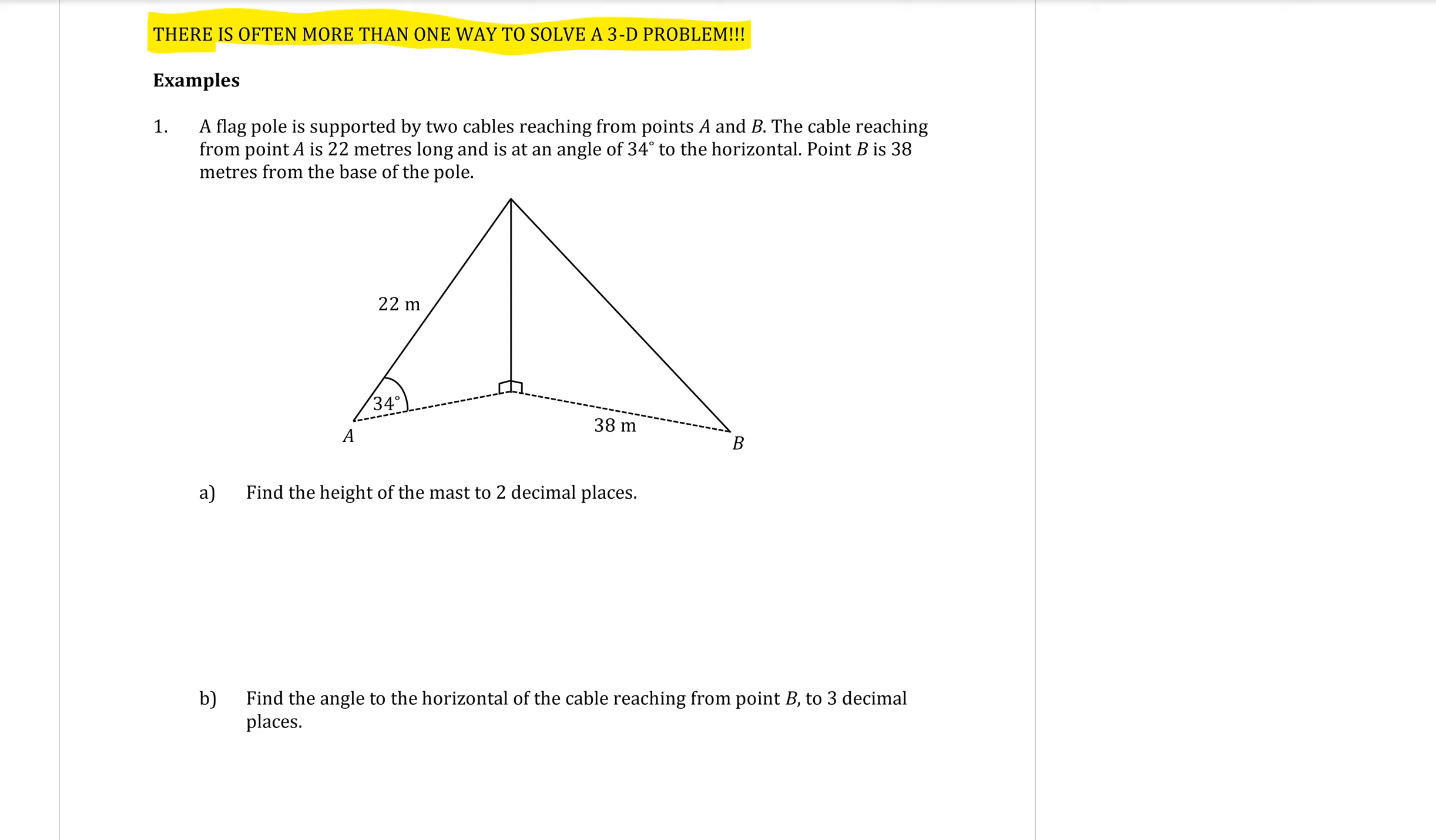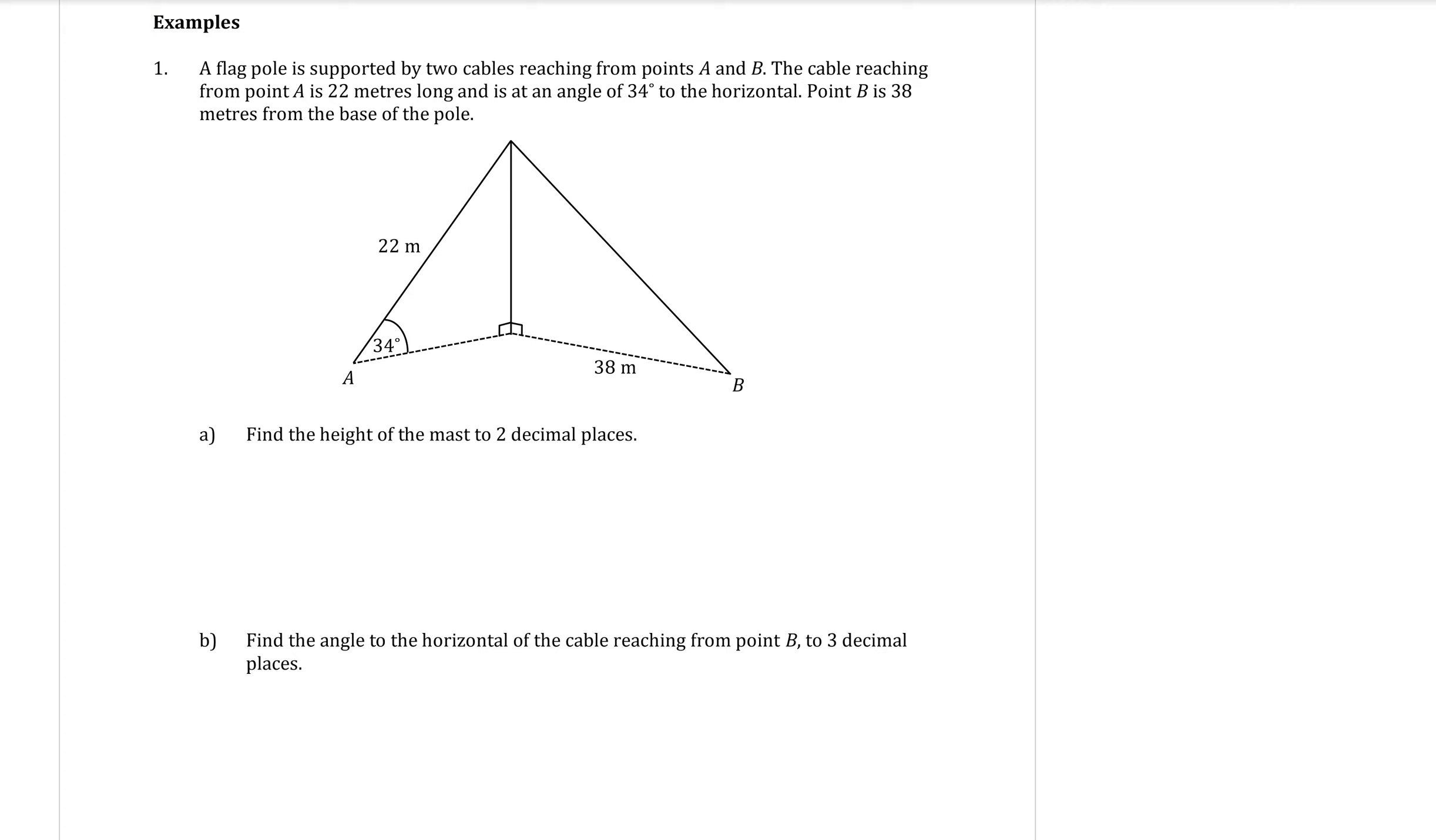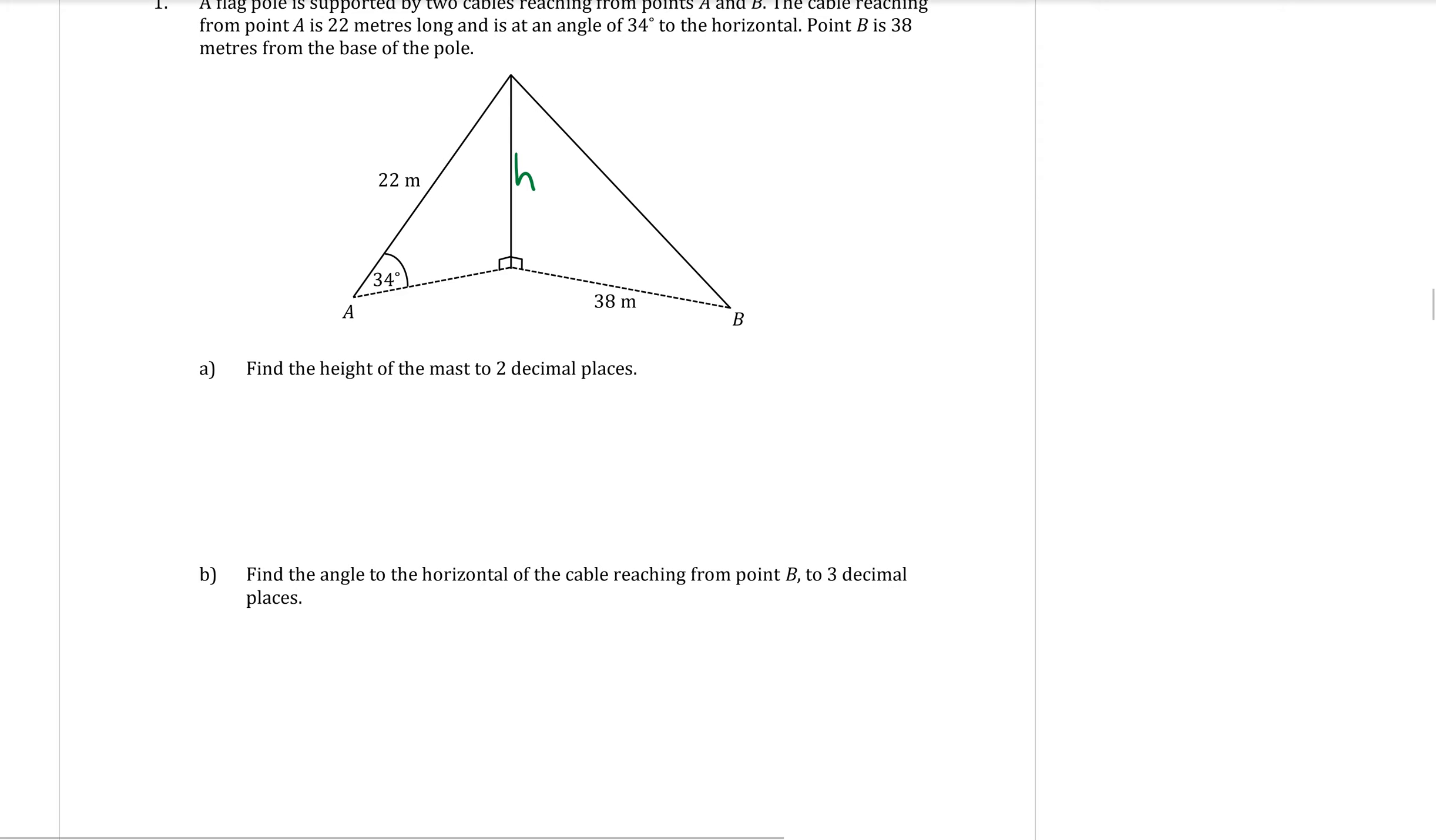Now I don't have enough information on this triangle on the right to do that so we're going to use the triangle over here on the left. We want to find the height of the pole so I'm going to call that H. There it is, height of the pole. Using this triangle that means that I've got the opposite side and I have got the hypotenuse. So I'm going to use sine.